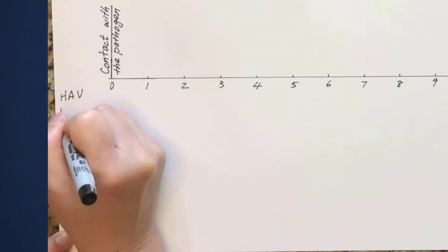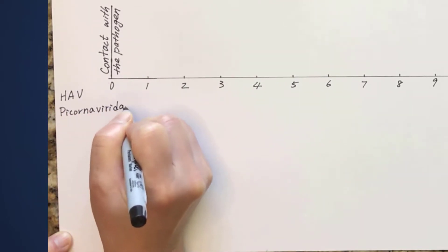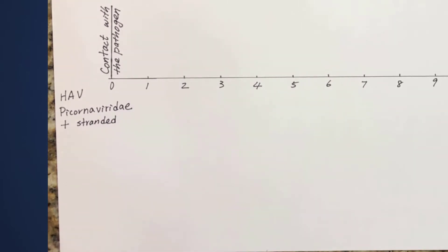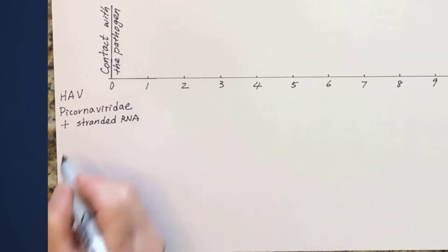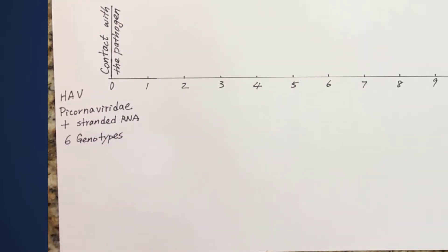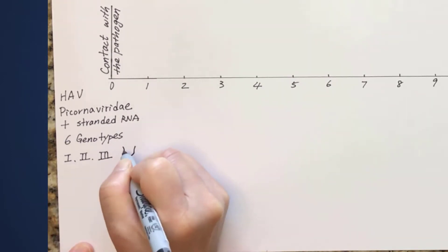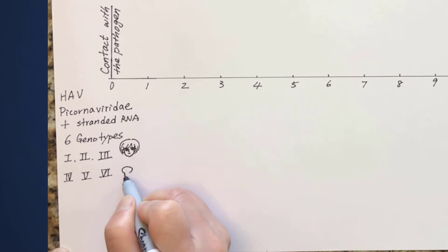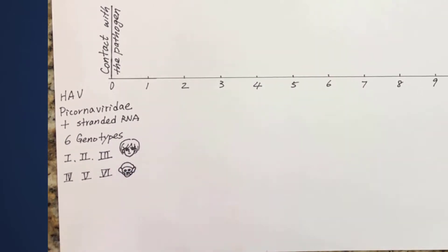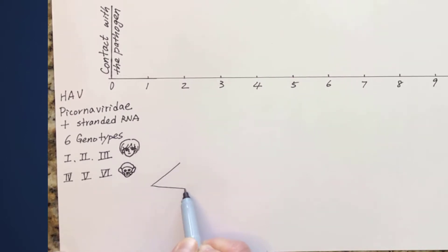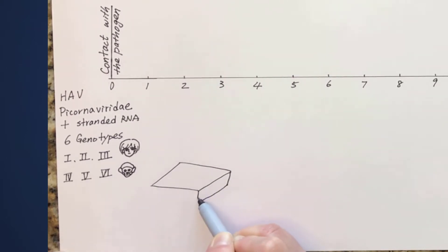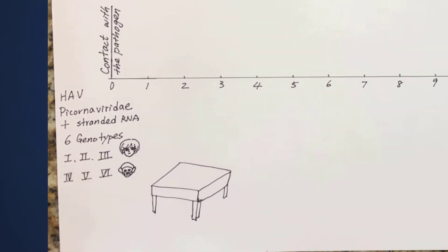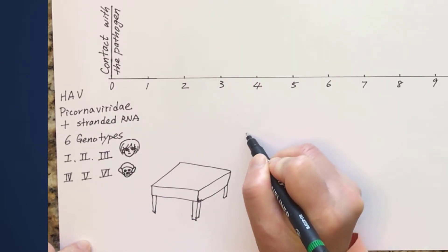Belonging to the family of Picornaviridae, hepatitis A virus is a positive-stranded RNA virus. It has six genome types. Genotypes 1, 2, and 3 infect humans, and genotypes 4, 5, and 6 infect simians. This virus is quite stable in the environment, which means that hepatitis A virus can last outside of a live host for months.